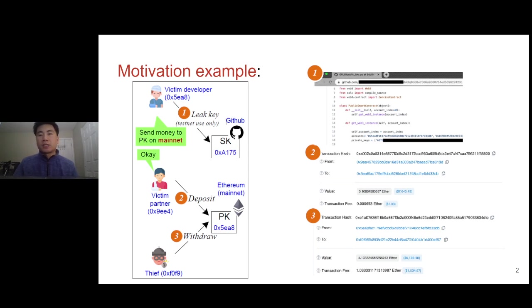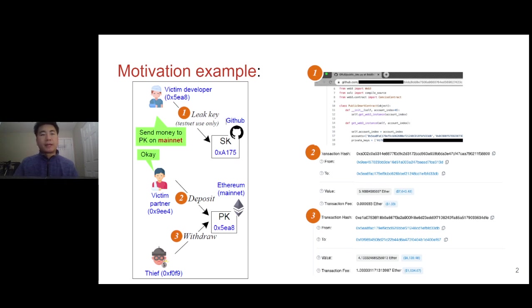The secret key was supposed to be used only in the testnet. However, the victim's partner directly sent assets to the Ethereum mainnet under the related public key. His assets were immediately stolen by the thief. These assets cannot be recovered.